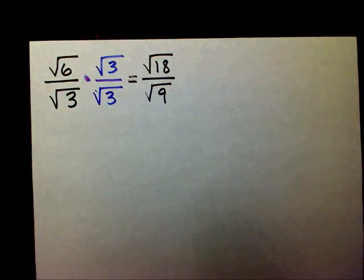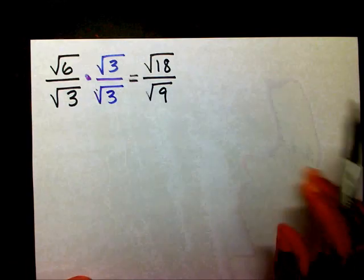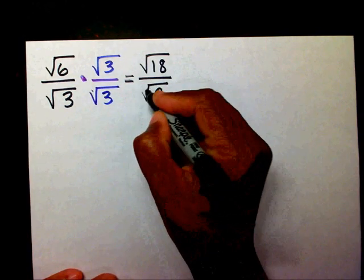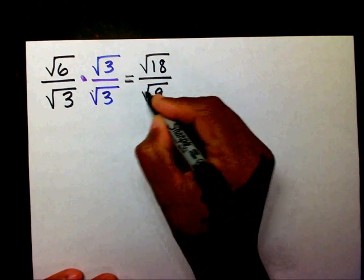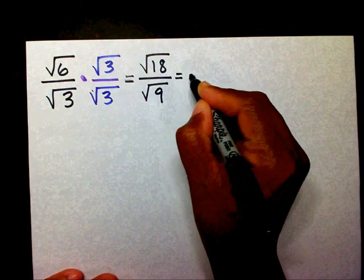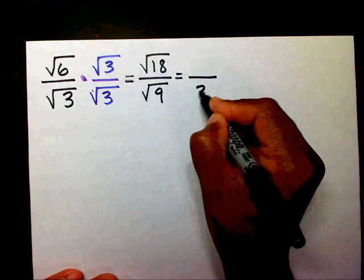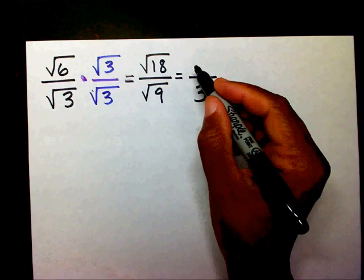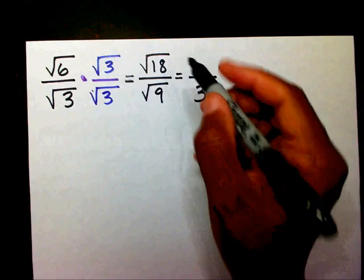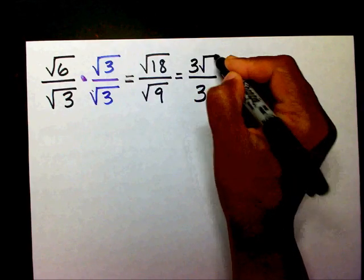When we rationalize a denominator, that creates a perfect square in your denominator. So therefore we can say we know that radical 9 is 3, and we can also simplify radical 18 to 3 radical 2.